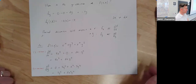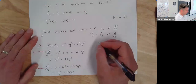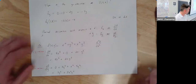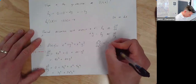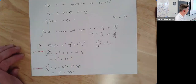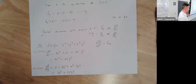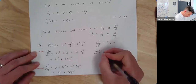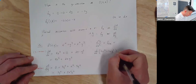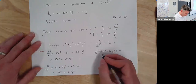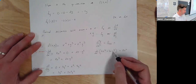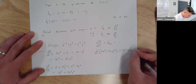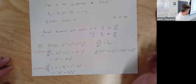We can also take second partial derivatives. The second partial derivative of f with respect to x — written as fxx — is just taking the partial derivative with respect to x of fx again. That's the derivative with respect to x of 4x cubed plus 2x y to the fifth: the derivative of 4x cubed is 12x squared, and y to the fifth is still a constant multiple, so the derivative of 2x is 2, giving 2 times y to the fifth.